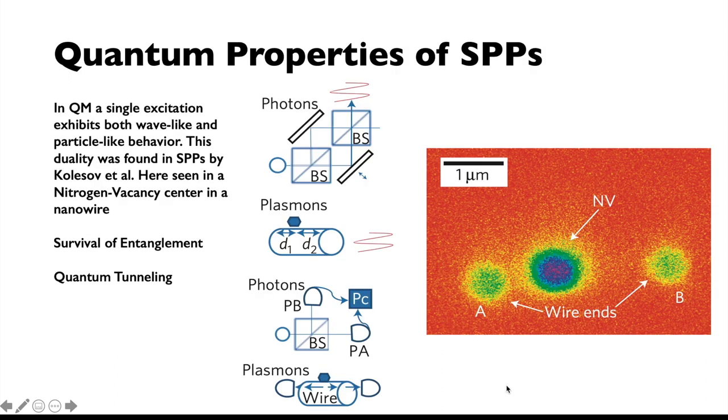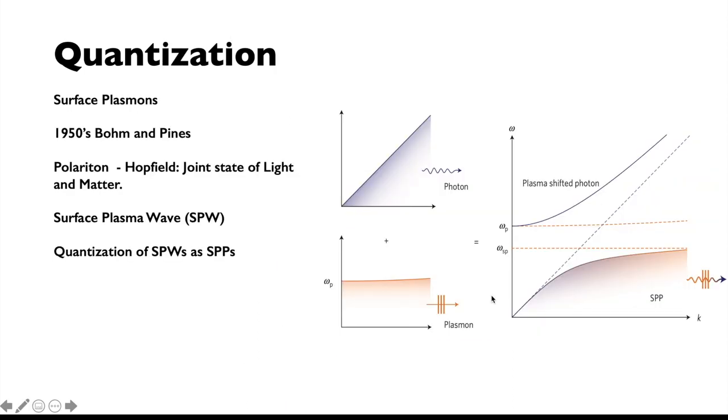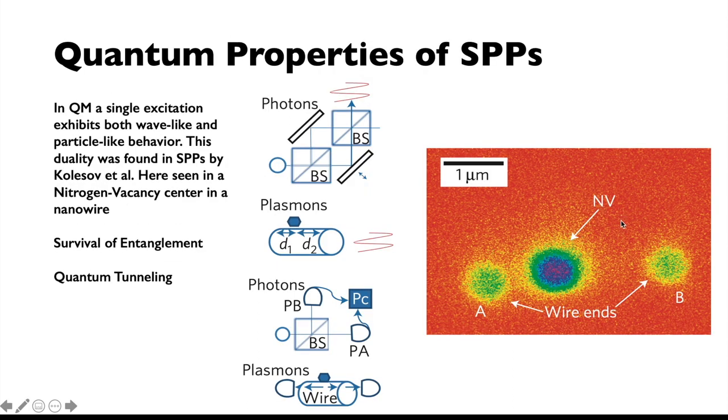Quantum properties of SPPs. In quantum mechanics, a single excitation exhibits both wave-like and particle-like behavior. This duality was found in SPPs as well by Kolesov and others. Here we see the duality in a nitrogen vacancy center in a nanowire, the NV.